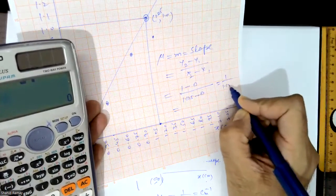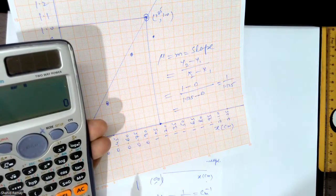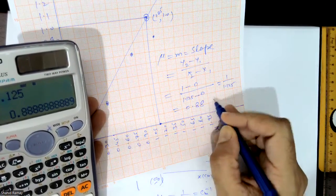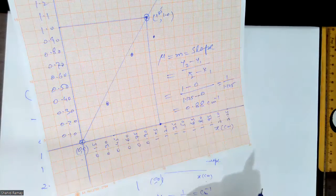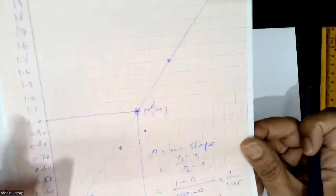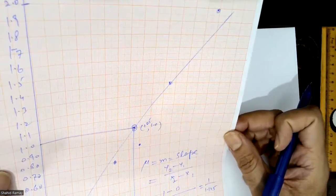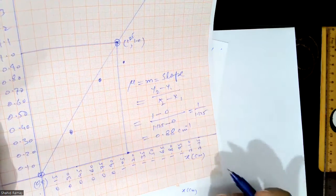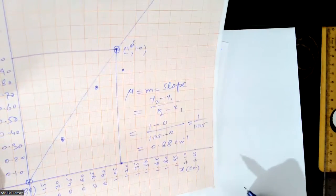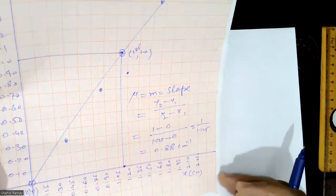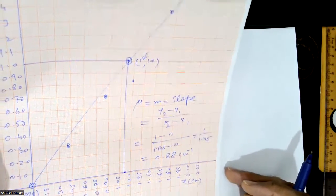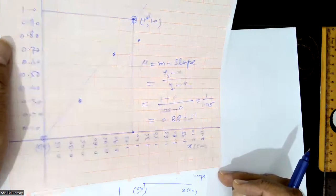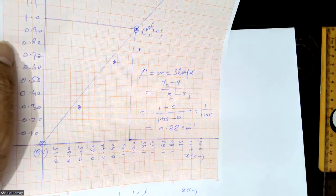So 1 / 1.125 gives an answer of 0.88 cm⁻¹. In this way you can plot this graph easily. Your answer should be close to 1; if your answer is 0.95, 1.1, or 1.125, that is okay. You should know how to plot the graph of the absorption coefficient of gamma rays. Thank you.